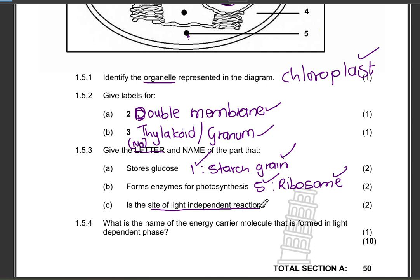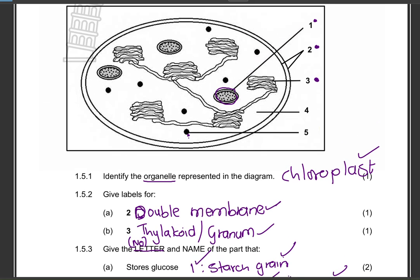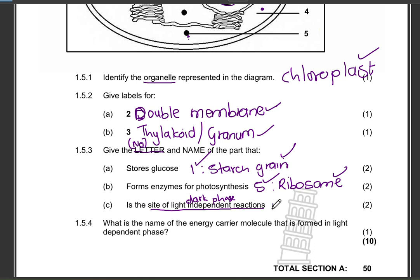Next: give the number and name of the part that is the site of light-independent reactions — they are referring to the dark phase. The dark phase takes place in the stroma, and that is number four. One mark for the number and one mark for the name: S-T-R-O-M-A.